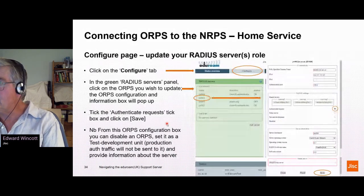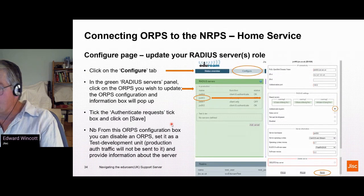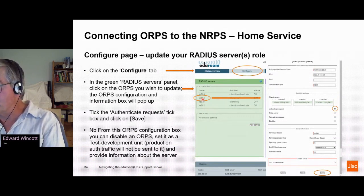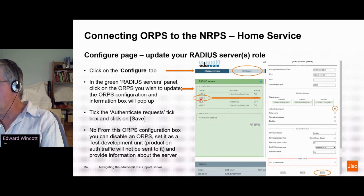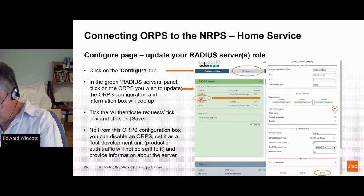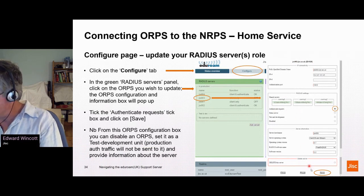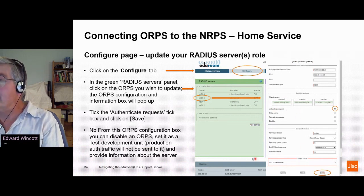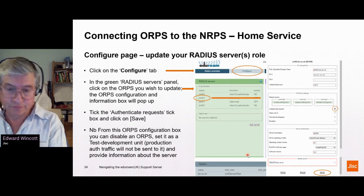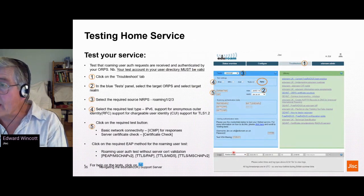To change the status of your ORBS: if you previously registered an ORBS and set it as a visited service, click on the ORBS name — the dialog panel comes up again. This time, tick the box for 'Authenticate Requests', scroll down, and click Save. At the next hourly refresh, it will go into the NERPS configuration as a home service provider.